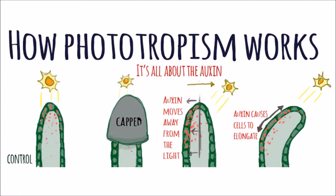The main experiment that you will need to talk about is the one where either different parts of the plant have been capped or different parts of the plant have been removed. You'll need to talk about how the auxin moves through the plant and the effect that the auxin has once it diffuses down one side of the plant or the other.